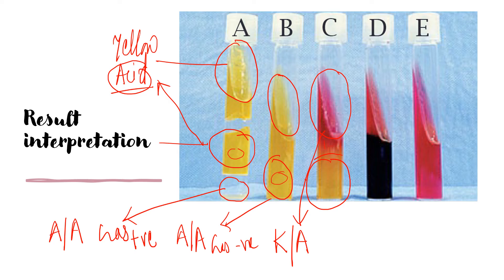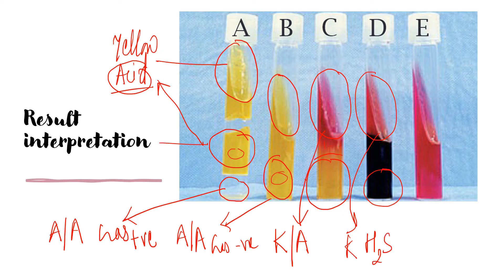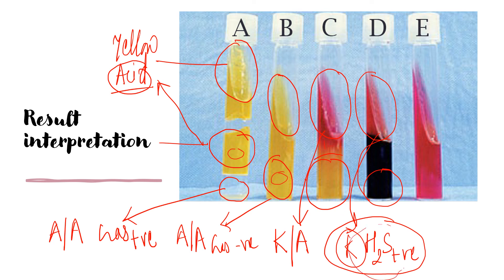In tube D, the slant shows pink (alkaline) color, and we can also see H₂S production — a black precipitate. We write H₂S positive. This represents that the slant is alkaline but we cannot clearly see the butt color due to the black H₂S precipitate. In tube E, both the slant and butt show alkaline conditions, so we write K/K.